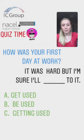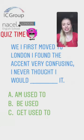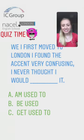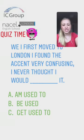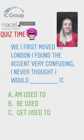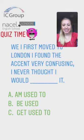We have four questions in total. Number two: 'When I first moved to London I found the accent very confusing. I never thought I would blank it.' The options are: A — am used to, B — be used, or C — get used to. What is the correct answer — A, B or C?